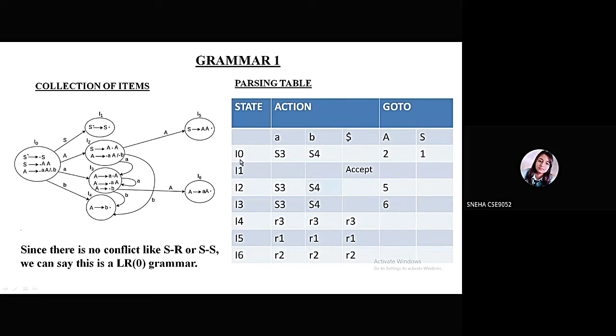For I0 for B, I am going to state number 4, so I am writing shift 4. Similarly, for capital A, I am going to state number 2. For goto, we only have to write the number of the state, so we are writing 2 and 1 respectively. For I1, since this is a reduced node, we will write in the dollar, we will write accept.